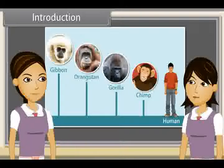Do you want to say that this chart shows that human beings had chimpanzees as their ancestors, chimpanzees' ancestors were gorillas, and so on?